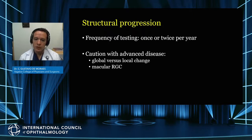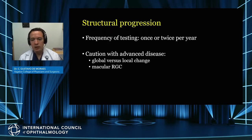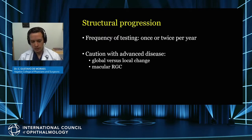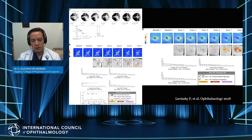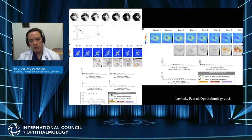Always be careful when testing advanced glaucoma patients. There is an issue with advanced disease where global metrics may not detect progression due to a floor effect. Using macular scans may be better in this scenario, as the floor of the macular ganglion cell thickness is reached much later. A study by Levinsky and colleagues showed that in very advanced glaucoma, progression was barely visible on RNFL scans, but detectable in the macula and consistent with the visual field progression rate. Always consider using the macula, particularly in advanced disease.